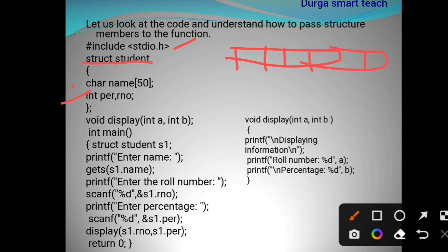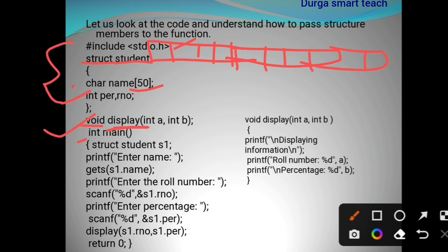Structure memory is allocated continuously. Here char has 50 memory locations allocated for the character array, and int is the roll number. Next, void display with int a and int b — display is a function declaration. Void is the return type, display is the function name, and int a and int b are the arguments. The program execution starts from main. The structure and display function are declared globally, so they can be used throughout the entire program.